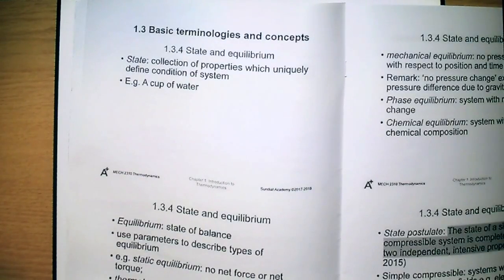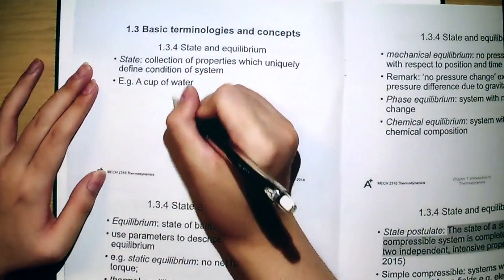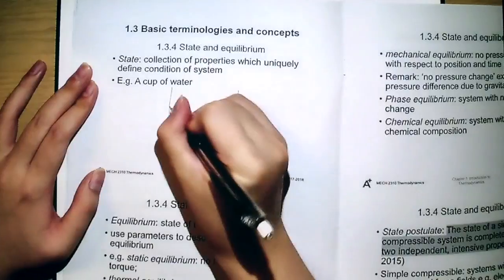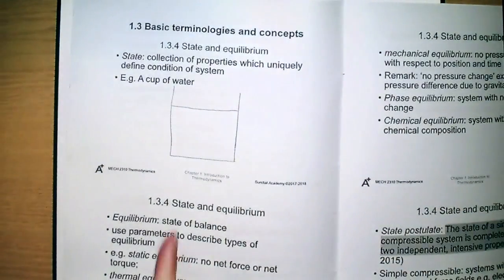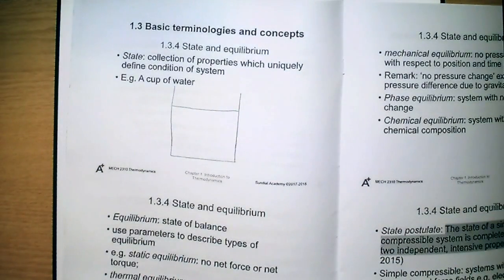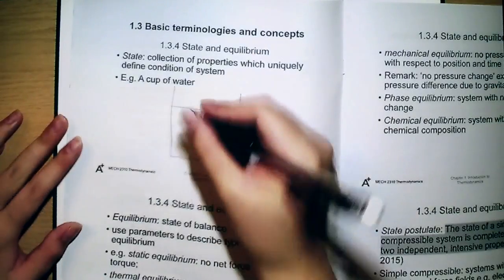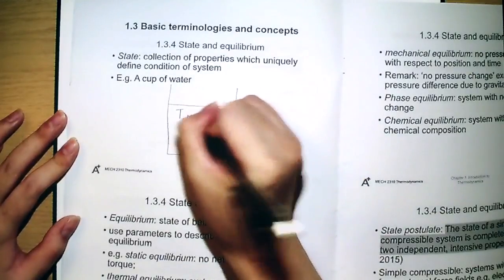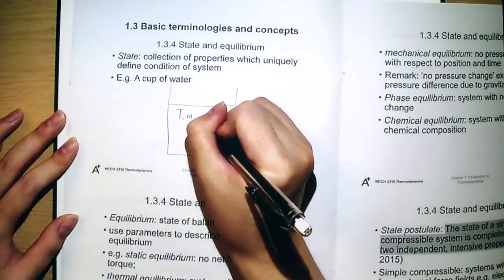Here, we again use the cup of water as an example. Suppose there's a cup of water that you have seen before. Something like this. Suppose it has been put in a room for a very long time. Then how can you describe this cup of water? We would use different kinds of properties. For example, you can measure its temperature, you can measure its mass, you can measure its pressure, etc.